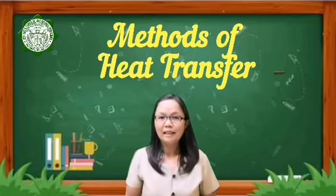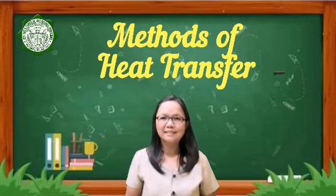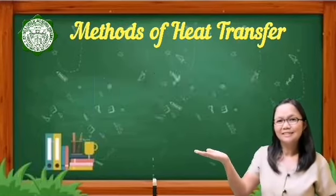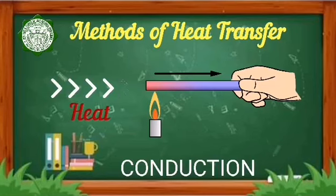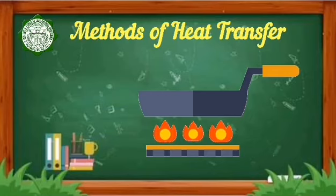Now, let us identify the methods on how heat is being transferred. Number 1: Conduction. Conduction takes place between objects that are in contact with each other. The energy is transferred through particles that are close or in direct contact with the object. An example of conduction is when you heat a pan on a stove — the heat from the burner transfers directly to the surface of the pan.